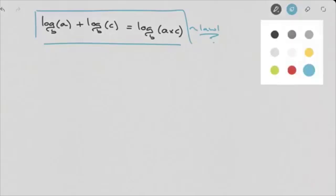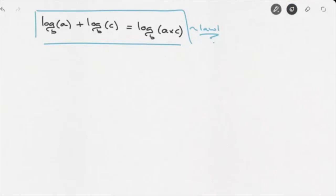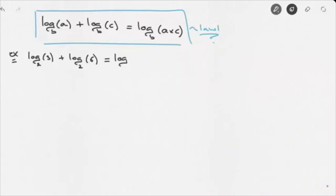Let's see how we can use this with an example. Let's say we were asked to simplify log base 2 of 3 plus log base 2 of 6. Using this law of logarithms, we can state that this equals log base 2 of 3 times 6, which equals log base 2 of 18.